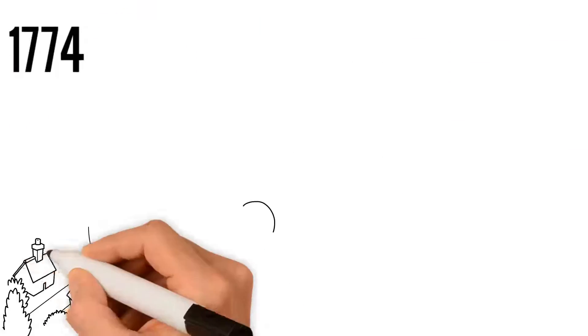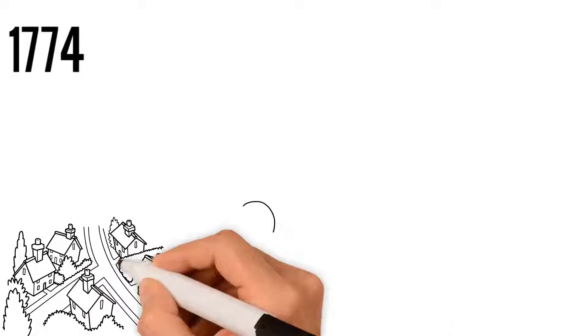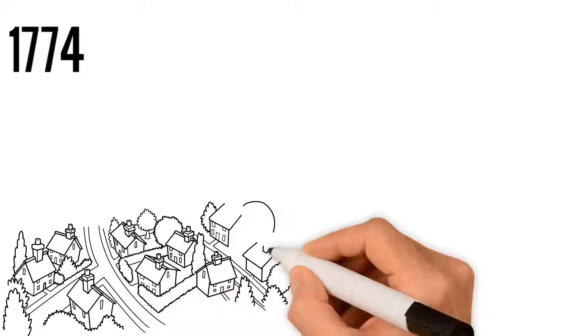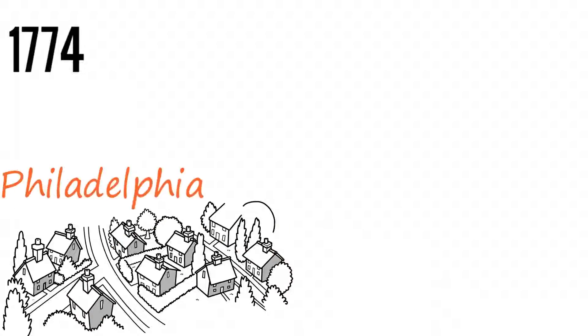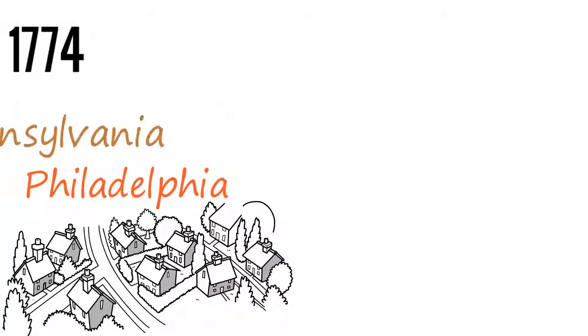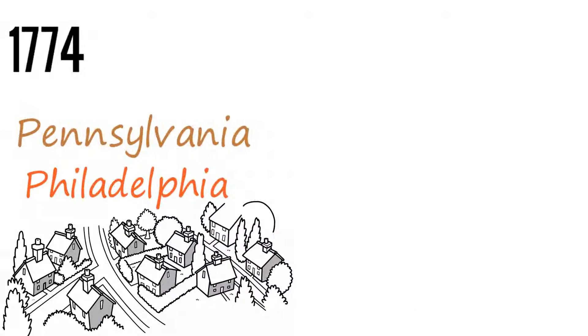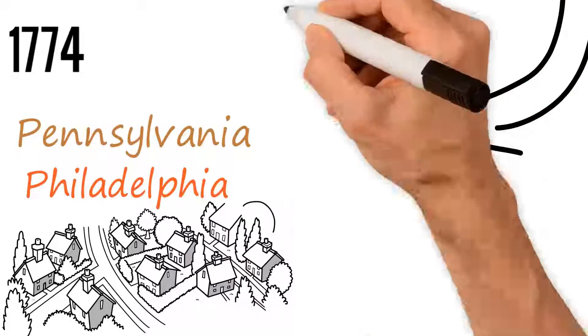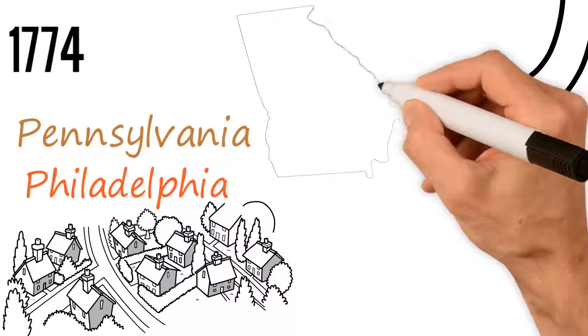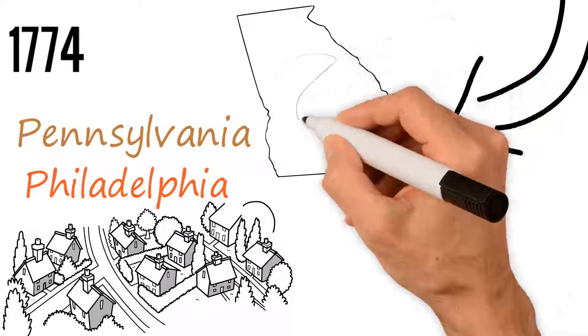In 1774, representatives from 12 of the 13 colonies met in Philadelphia, Pennsylvania for the First Continental Congress. Of the 13 colonies, only Georgia was absent.